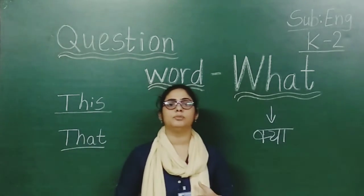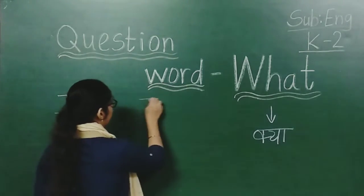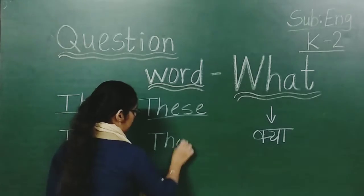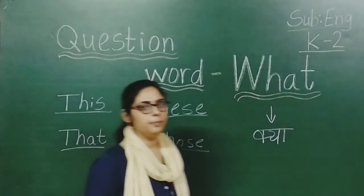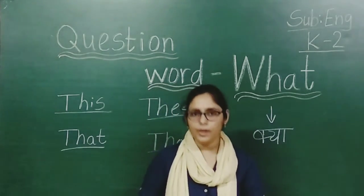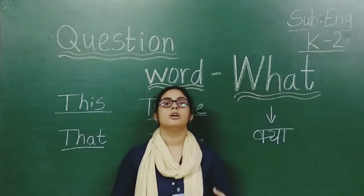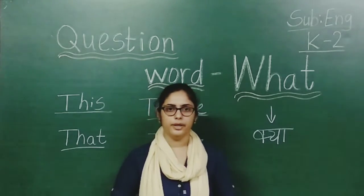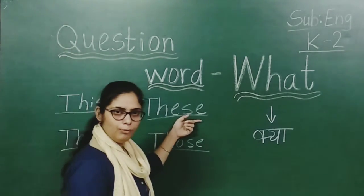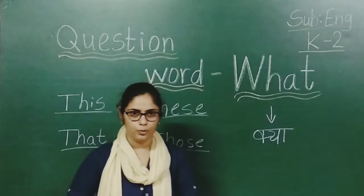Similarly, jab subject aur object saada hojaate hain, means more than one hojaate hain, tab ham use kaartte hain. These and those ka, these ka use kaartte hain jab subject aur object saada hoota hai. Those, means this ham singular form ke hi, these ham plural form ke hi use kaartte hain, that singular form ke hi aur those plural form ke hi use kaartte hain.